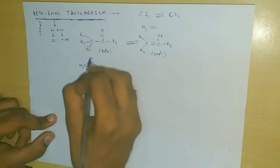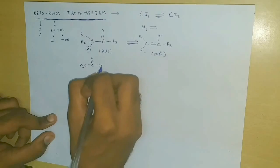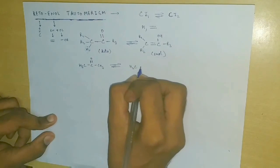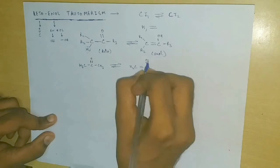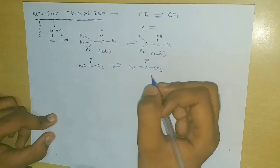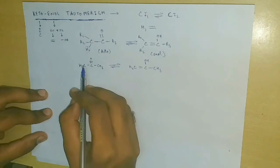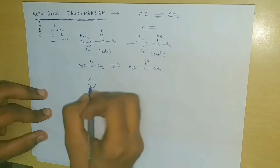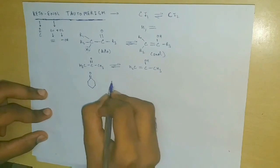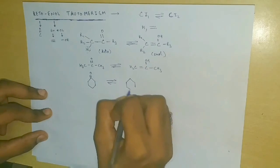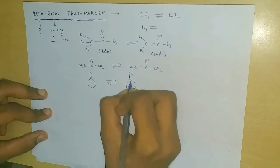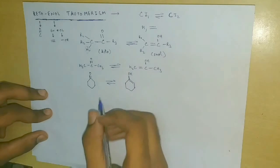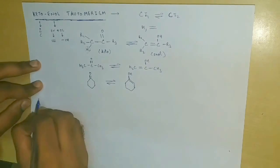Let's take an example of acetone. The Enol form in this case would look like this. And for cyclohexanone, this will be our Enol structure. Here we can see that I have just altered the positions of a hydrogen atom and a double bond for the structures.